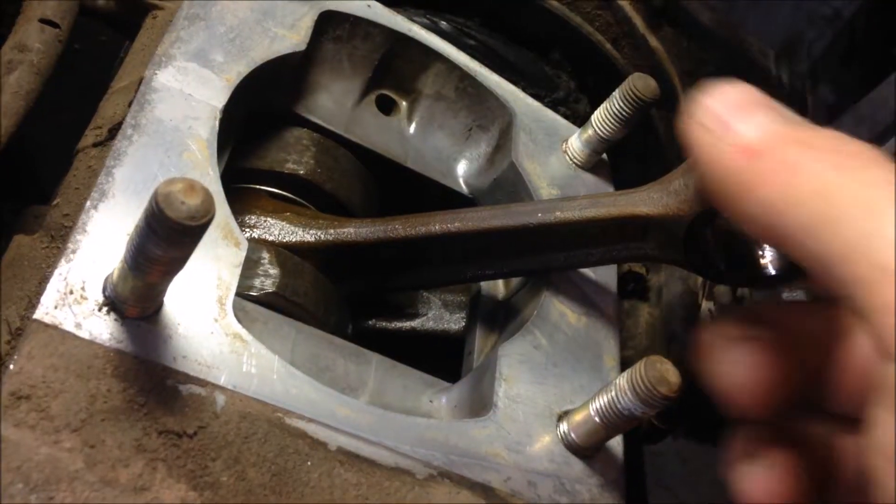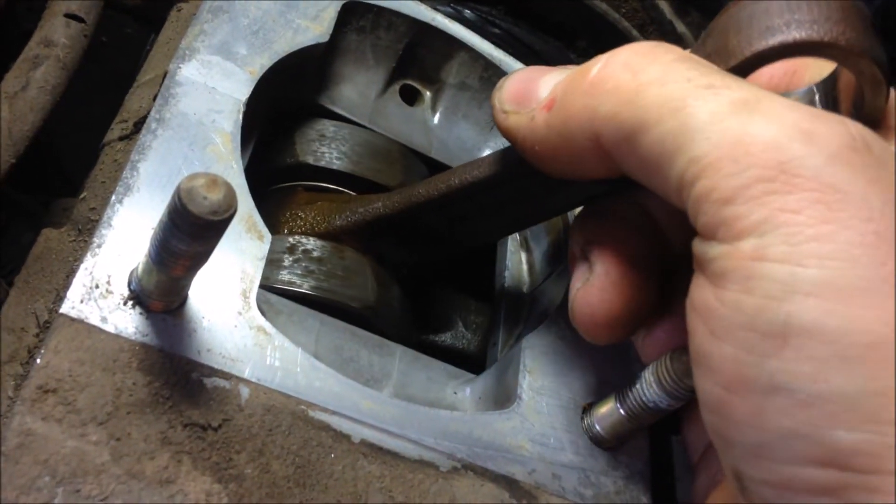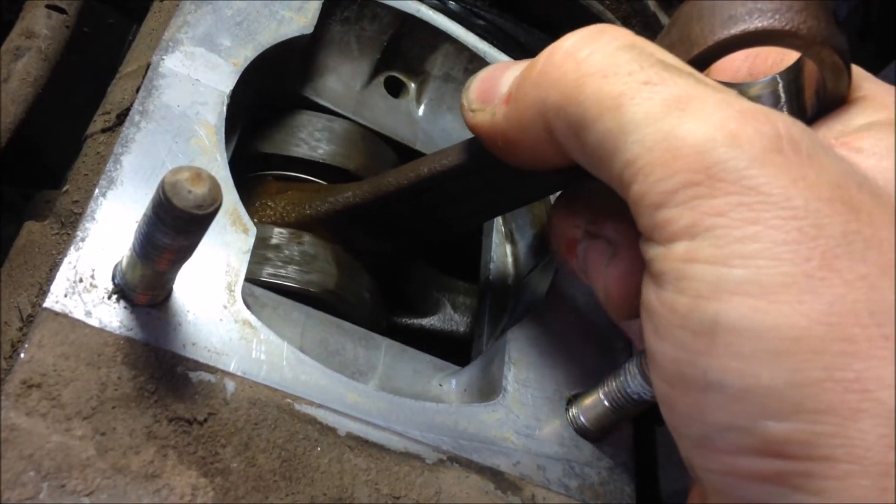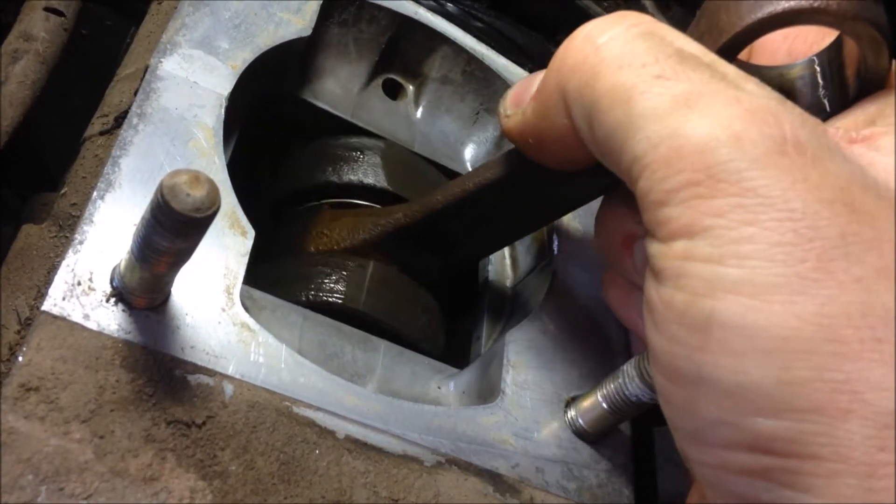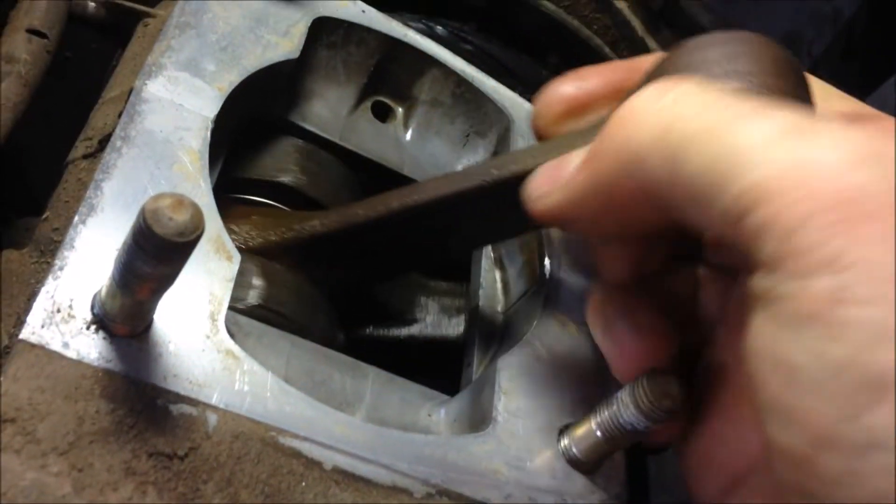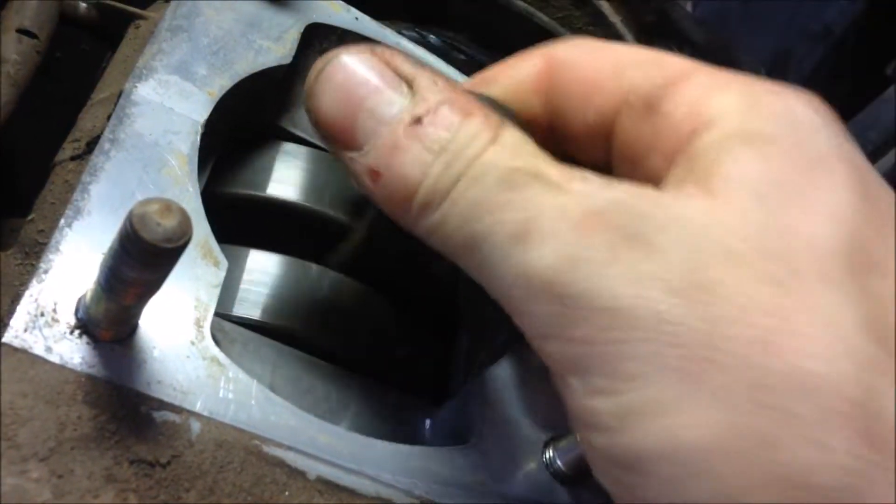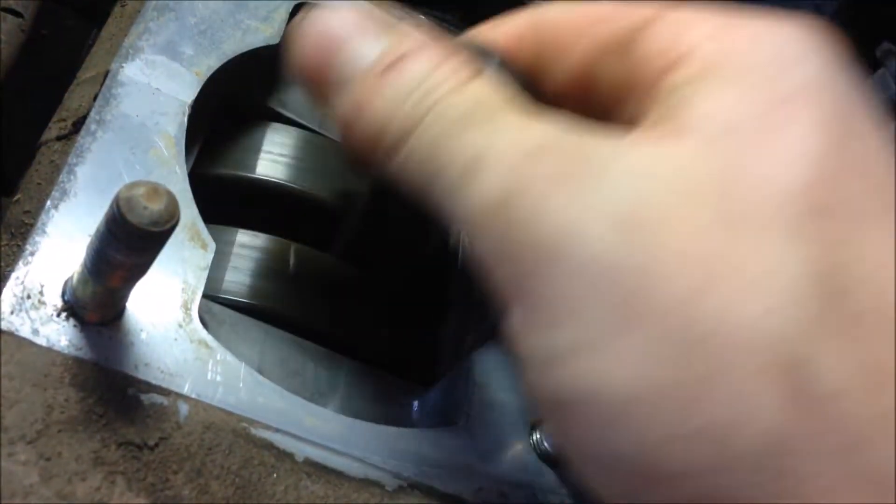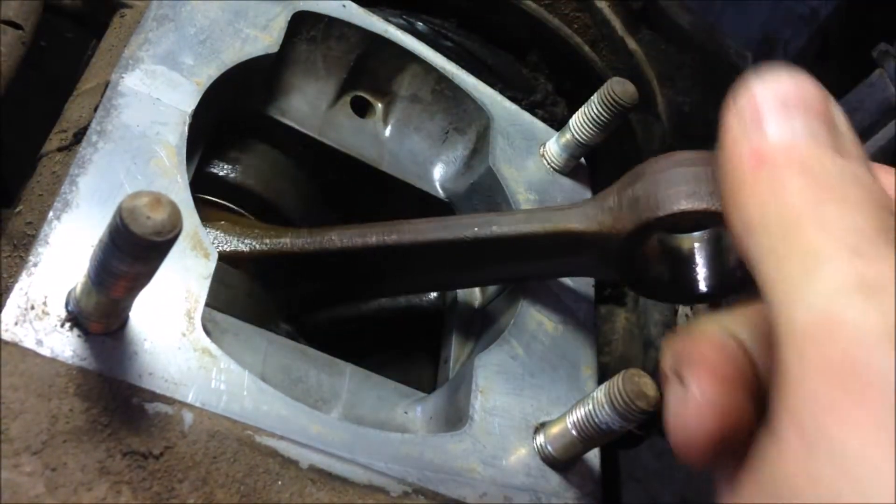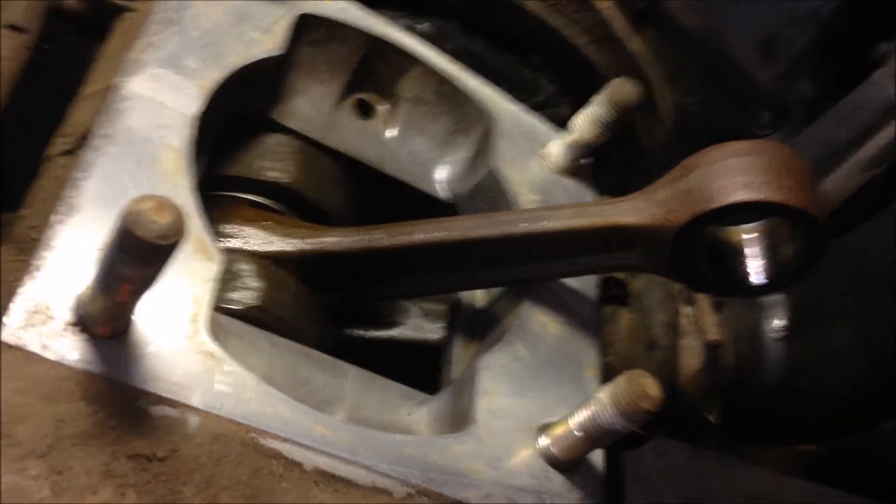The main thing for the bottom end is the bottom connecting rod bearing where the connecting rod connects to the crankshaft. There's no slop up or down, so we know that's good. The engine spins over very nicely, so we know there's no issues here with the bottom end.